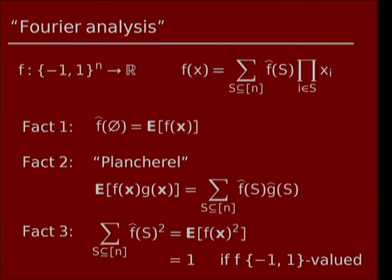To give the formal definition, I need to remind you about Fourier analysis. It's actually not even really Fourier analysis — I prefer to think of it as expressing a function as a multilinear real polynomial. If you have a function from minus-1, 1 to the n into the reals, you can express it as a multilinear polynomial: a sum of monomials depending on some subset S of the n coordinates, with real coefficients f-hat-S. These are the Fourier characters and Fourier coefficients. The constant coefficient (the empty product, equal to 1) is the same as the expectation of f under a random input.